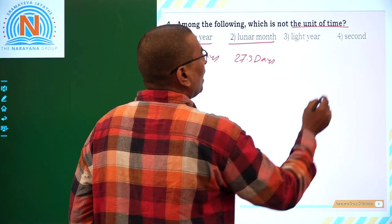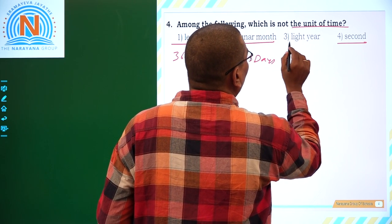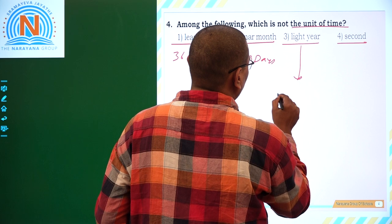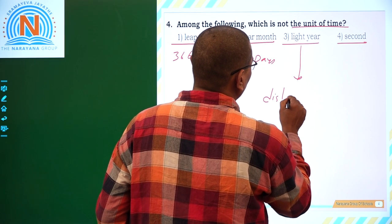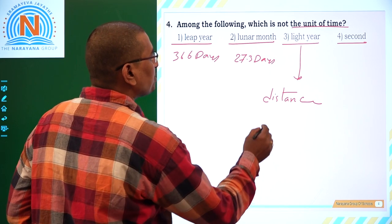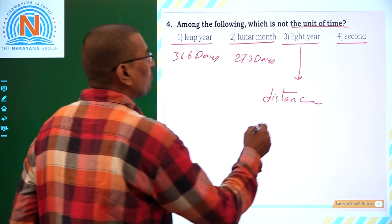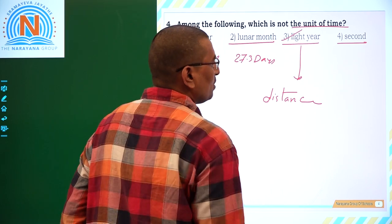Second is time-related, whereas light year is a distance. It is the distance light travels. So it is not a unit of time. This is option number 3.